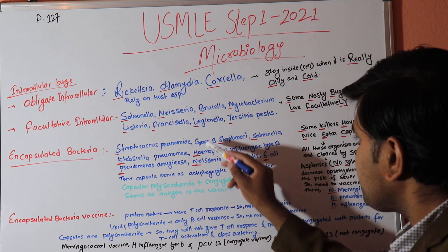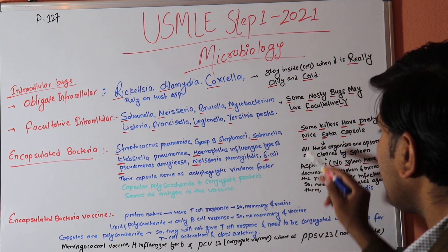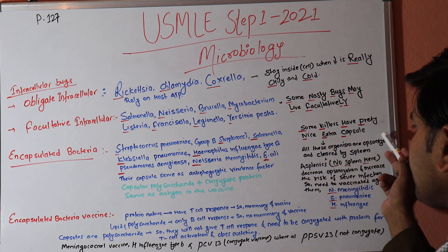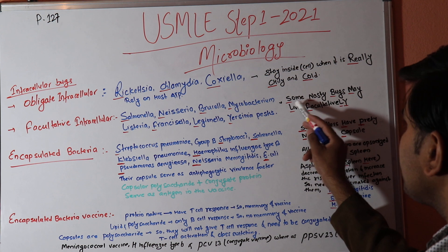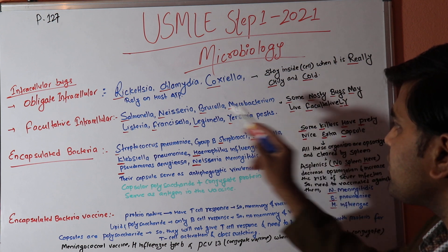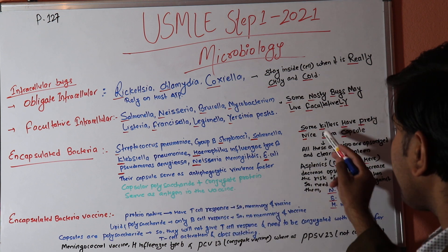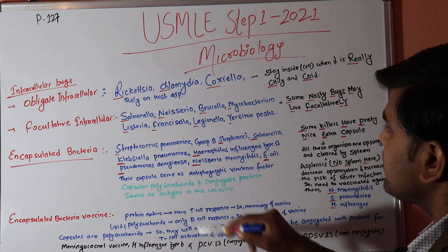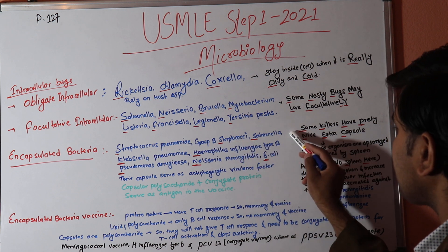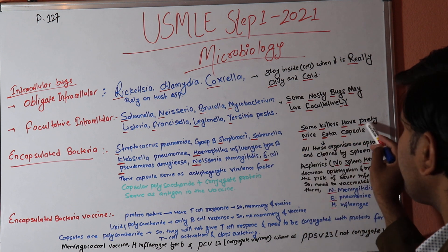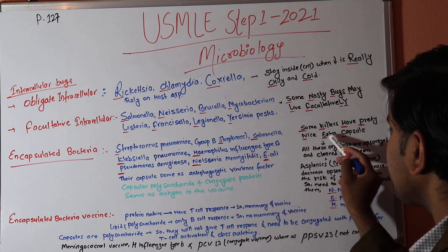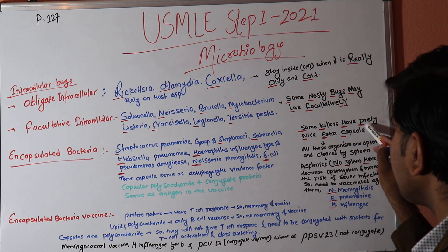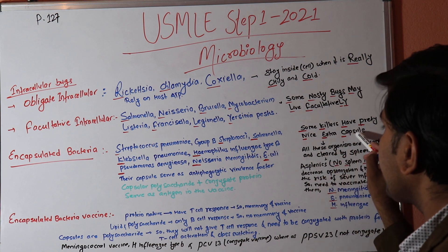To remember the encapsulated bacteria, use the formula: 'Some Killers Have Pretty Nice Extra Capsule.' S = Streptococcus pneumoniae, Group B Streptococci, and Salmonella (three S's); K = Klebsiella pneumoniae; H = Haemophilus influenzae type b; P = Pseudomonas aeruginosa; N = Neisseria meningitidis; E = E. coli. These are all the encapsulated organisms.